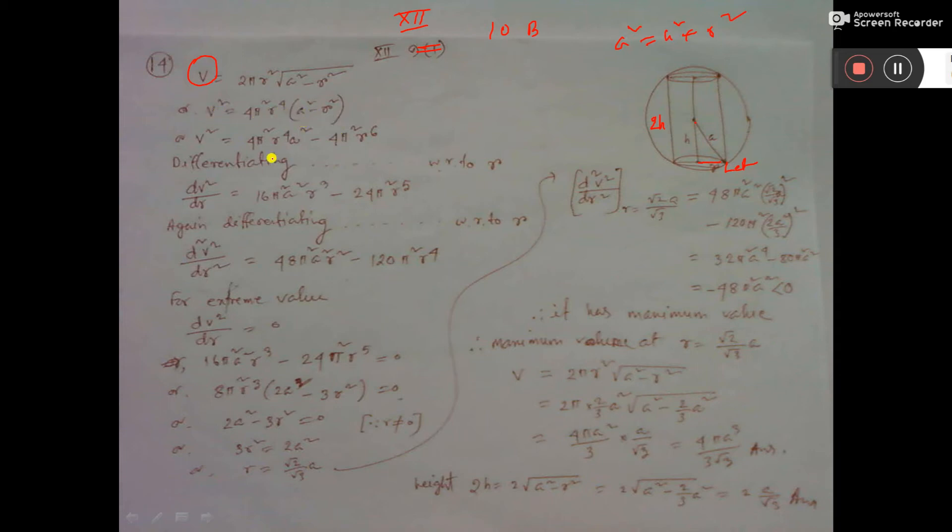So, this one you multiply inside and differentiate both sides with respect to r. Why with respect to r? Because right side only one variable. This A is constant. Why A is constant? Because A is the radius of the sphere, and the sphere is fixed. This cylinder may be small, may be big. I mean, height of the cylinder may be less.